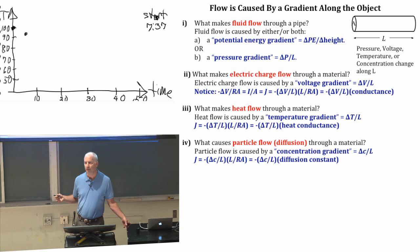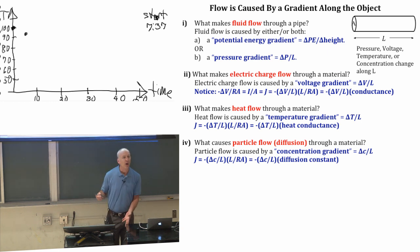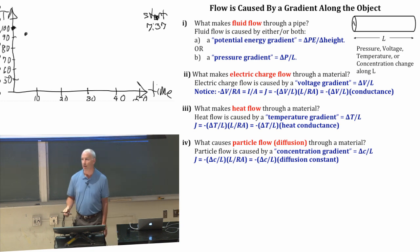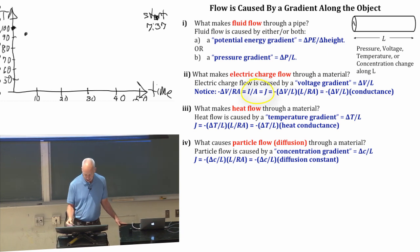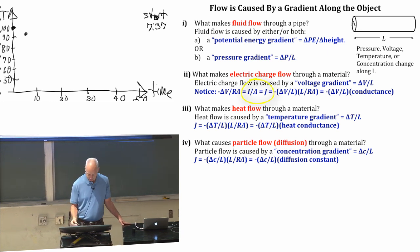And there's always something that's resisting the flow. So there's always a resistance, heat conductance, diffusion constant, something that gives you the current per unit area. This J - here I have actually written it down - J is a current, current per unit area.